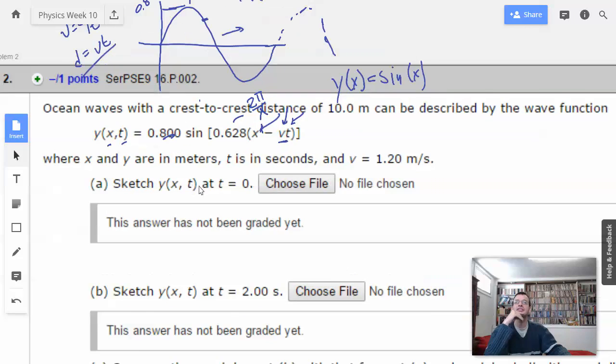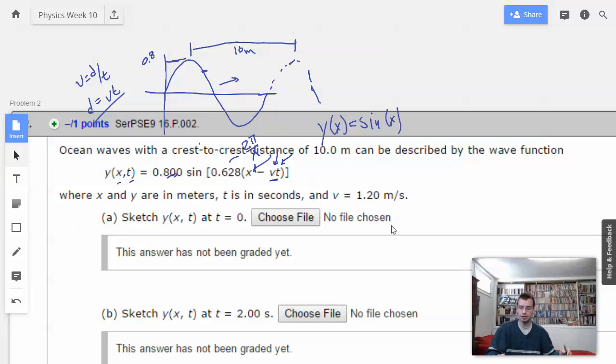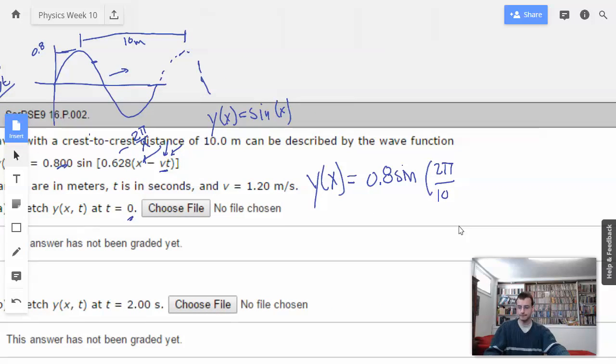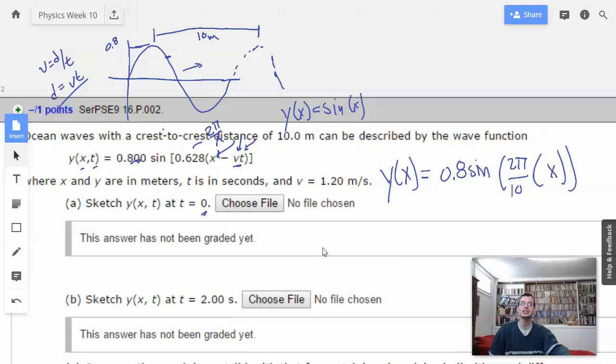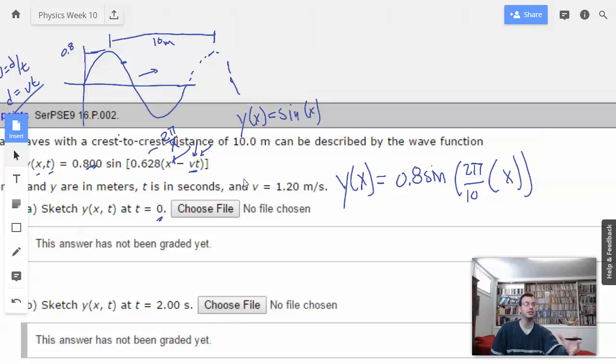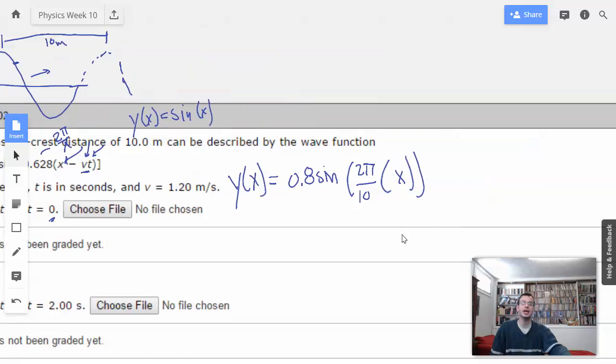Sketch y of x of t at t equals zero. All right. So before how I said we had an infinite number of x functions, basically. So by having two variables, we had an infinite squared number of functions, as opposed to a normal infinite number of functions where we just had x. So I'm going to rewrite this function in terms of just x, because they already told us that t is. We don't have to have it as t anymore. We can actually make it a real number, i.e., zero. So y of x equals 0.8 sine of, I'm going to call that 2 pi over 10, because I can look at that and be like, oh yeah, that's 2 pi over 10. 2 pi over 10 times x.